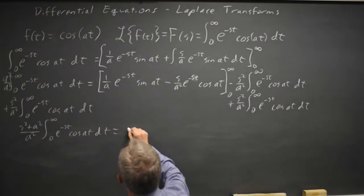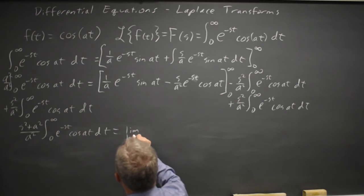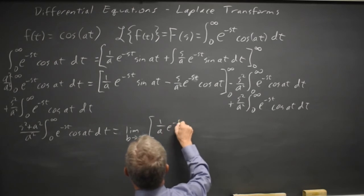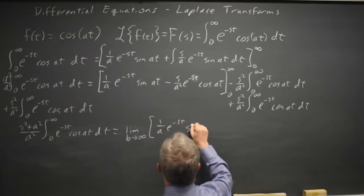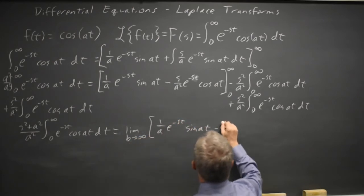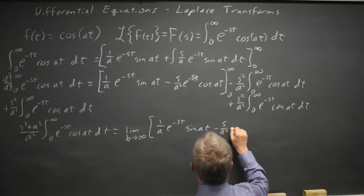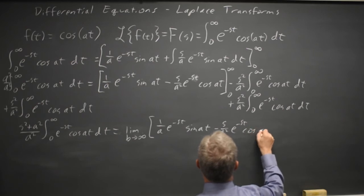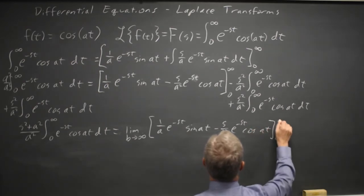So that is s squared plus a squared over a squared times the original integral equals, I'm going to write this formally as the limit as b goes to infinity of 1 over a e to negative s t, sine a t, minus s over a squared e to negative s t, cosine a t, from zero to b.